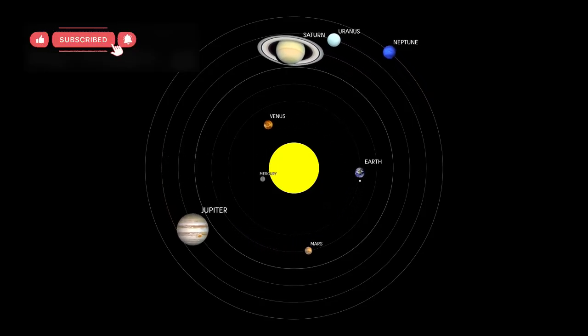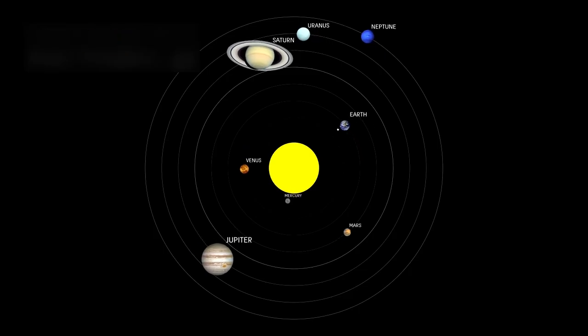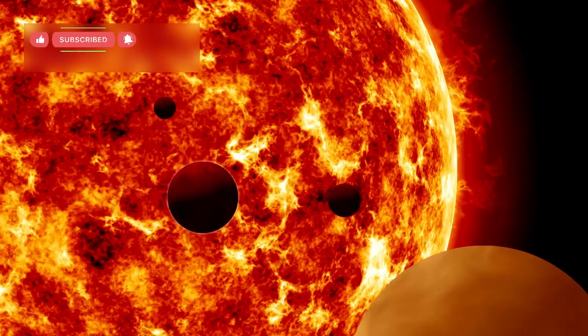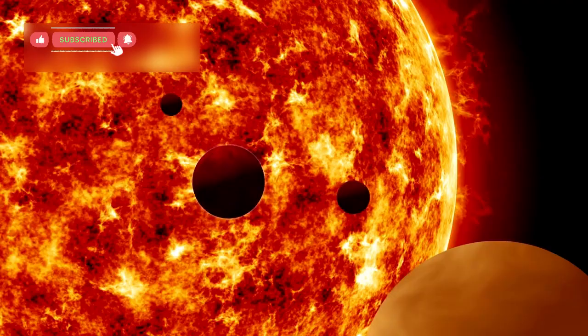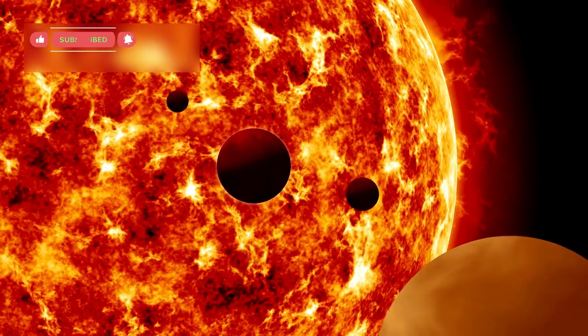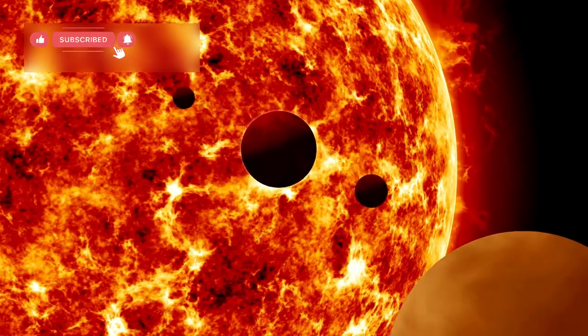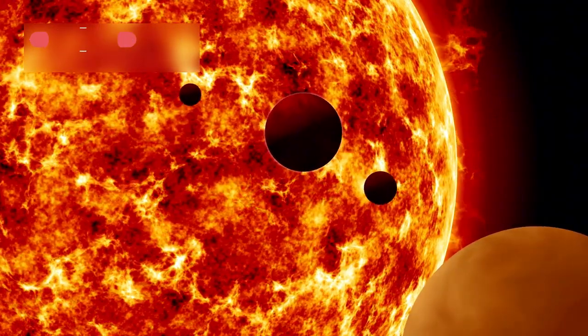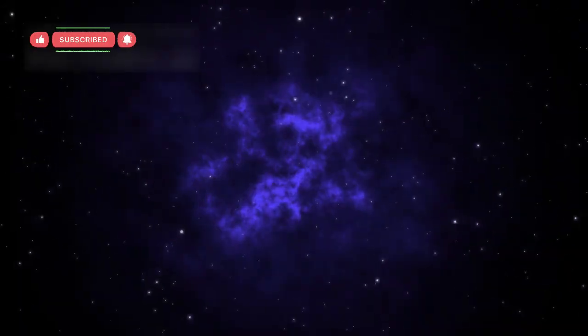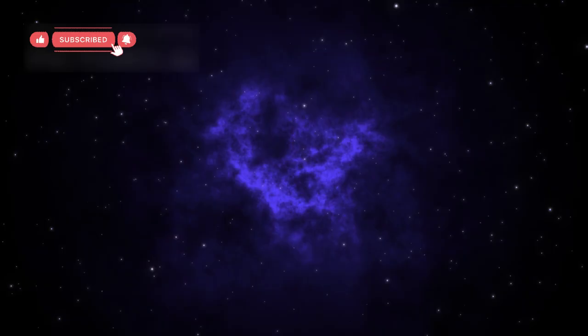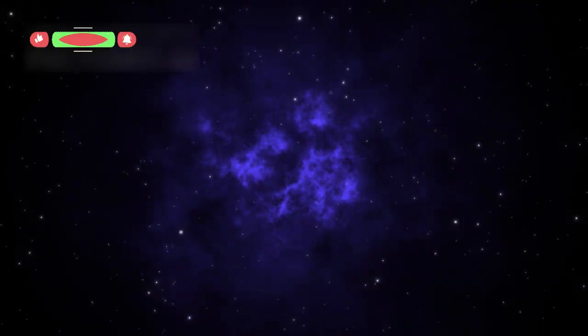Some scientists also believe Voyager may eventually pass near a rogue planet, a dark, cold world that orbits no star. These wandering planets are extremely rare to study, and if Voyager ever detected one, it could offer clues about how planets survive in total darkness. Although this is unlikely, the idea shows how much mystery the galaxy still holds.